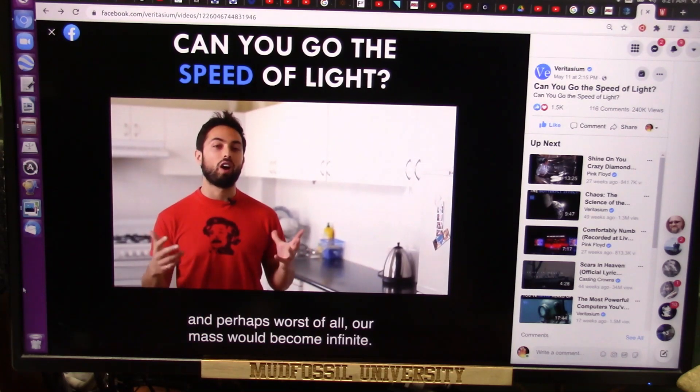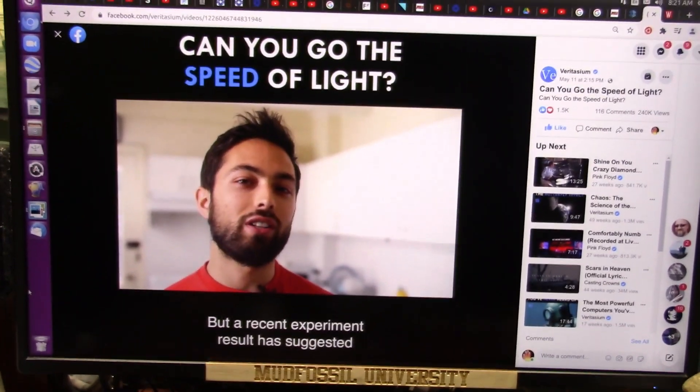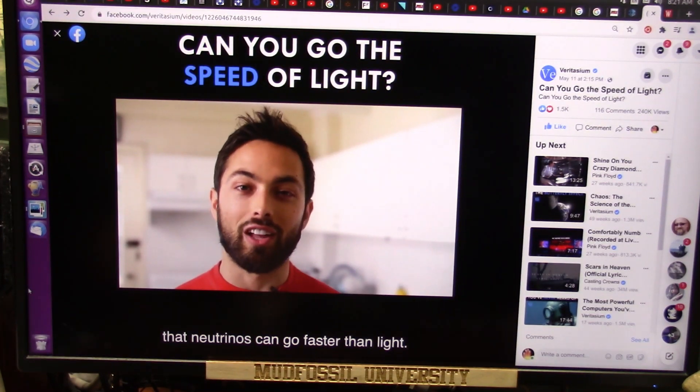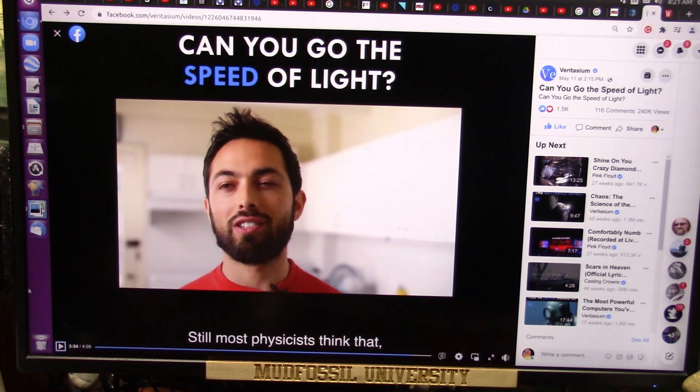Our mass would become infinite. But a recent experimental result has suggested that neutrinos can go faster than light. Still, most physicists... All right. Neutrinos can go faster than light. Neutrinos are light. They're not anything different than light. They make up light.